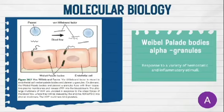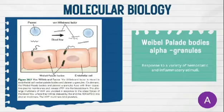The monomers become glycosylated, then form dimers and oligomers that migrate to the aforementioned storage organelles, where they polymerize to form ultra-large von Willebrand factor. At the same time of storage, a pro-peptide known as von Willebrand factor antigen 2 becomes cleaved from the end of domain D.